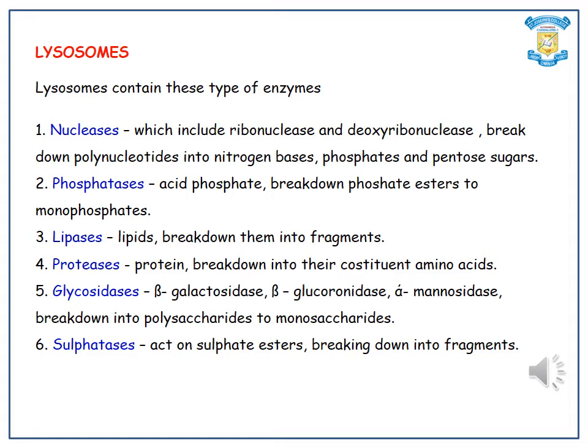Proteases break down proteins into their constituent amino acids. Glycosidases, including beta-galactosidase, beta-glucuronidase, and alpha-mannosidase, break down polysaccharides into monosaccharides. Sulfatases act on sulfate esters, breaking them down into their components.